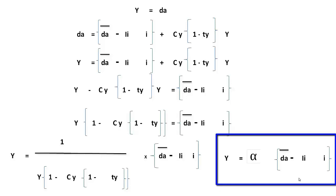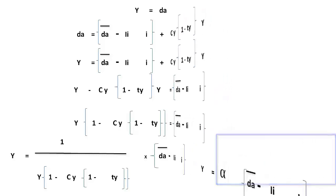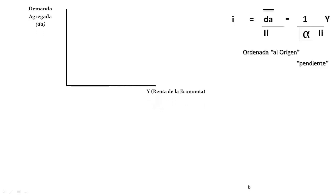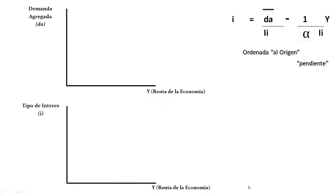Esta expresión refleja la relación entre tipo de interés y renta que garantizan el equilibrio en el mercado de bienes, que es lo que representa la IS: el conjunto de combinaciones de tipo de interés y renta que hace que el equilibrio en el mercado de bienes se produzca. Para representarla geométricamente, despejo el tipo de interés obteniendo la expresión equivalente que me permita operar gráficamente.